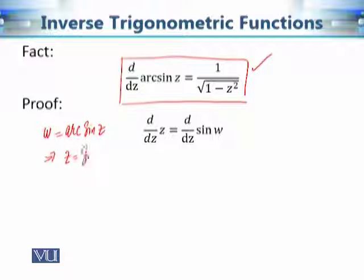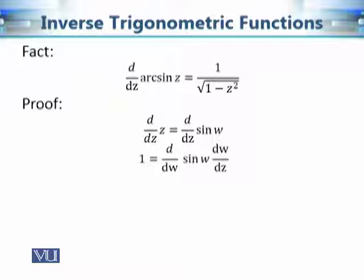From z equals sine w, differentiating both sides with respect to z gives d/dz of z equals d/dz of sine w. The left side equals 1, and for the right side we use the chain rule: the derivative of sine w with respect to w, multiplied by the derivative of w with respect to z.